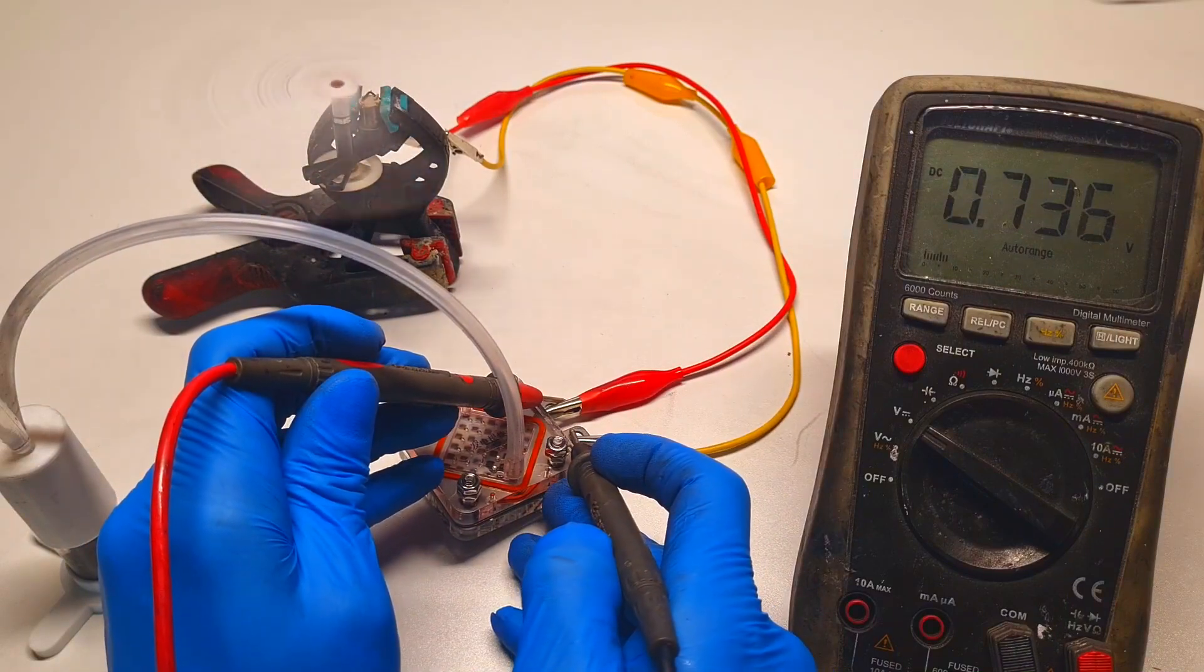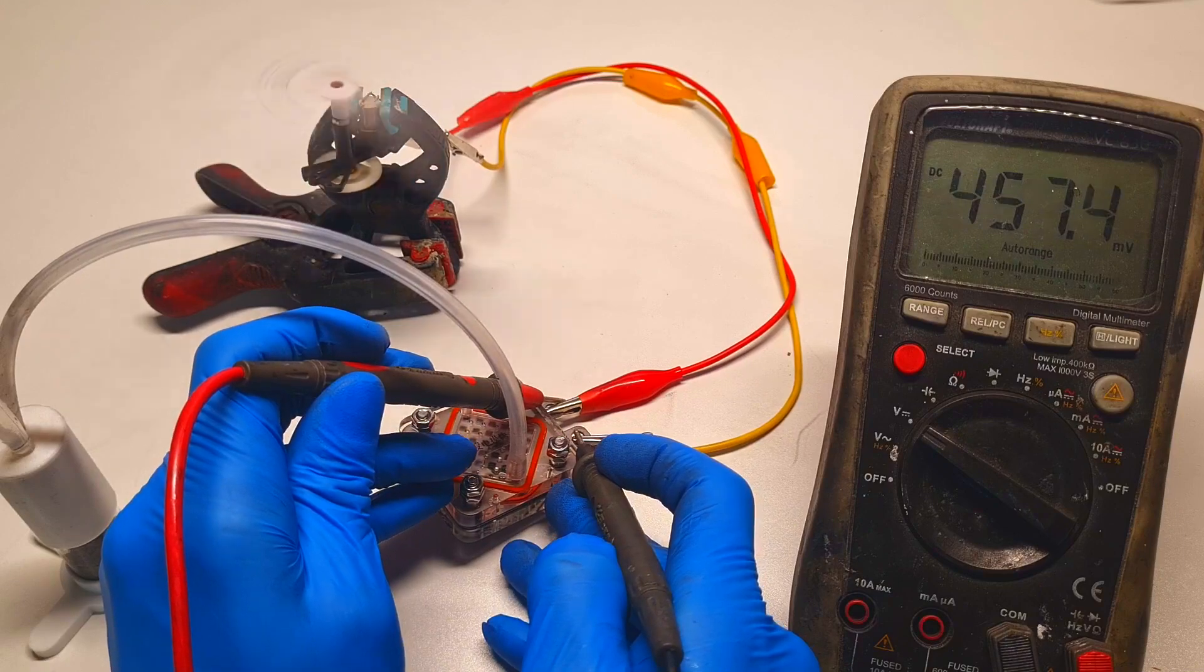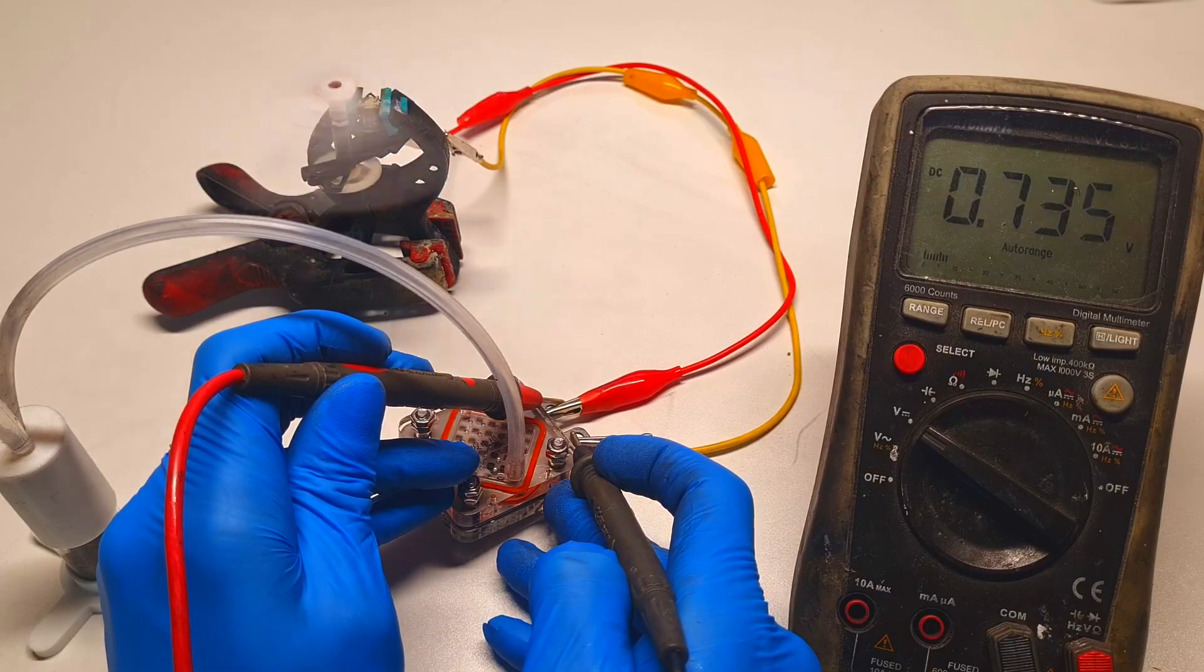The cell voltage on the load is 0.7 volts.